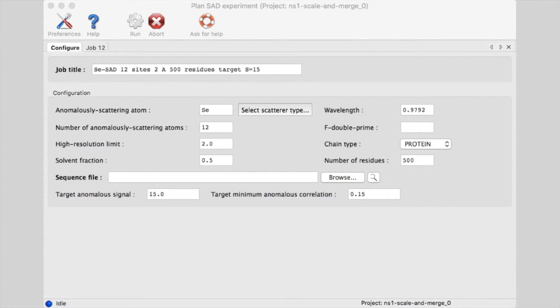Put in a job title to help you remember what you are testing with this run. Enter the anomalously scattering atom. Let's use SE for selenium, and set the wavelength to the peak at 0.9792 angstroms.